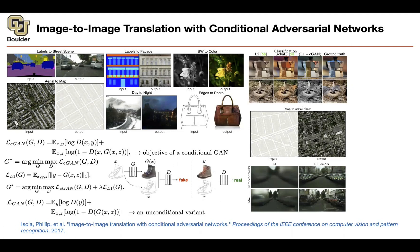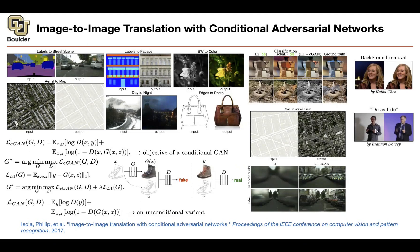I'm sure you know about this application — we use it all the time, removing our background when communicating over Zoom and replacing it with something else. You can also do deepfake, and basically the methodology behind deepfake is conditional GANs: somebody goes in, and you change that person to someone else. In terms of math this is not hard, but in terms of applications, you can start to see the broad applications of GANs.